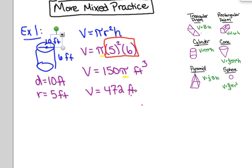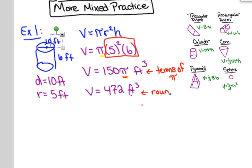It really depends on how they've asked for it. If they've asked for the answer in terms of pi, make sure that you leave the pi in your answer. If they ask you to round — whether to the nearest integer or the nearest tenth — then you'll put everything into your calculator, including the pi.